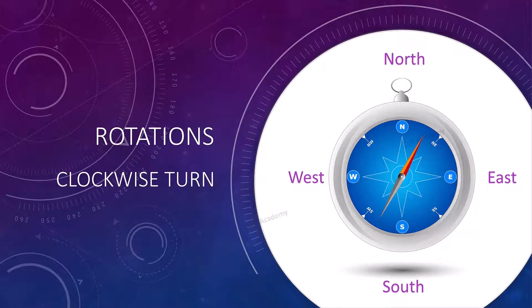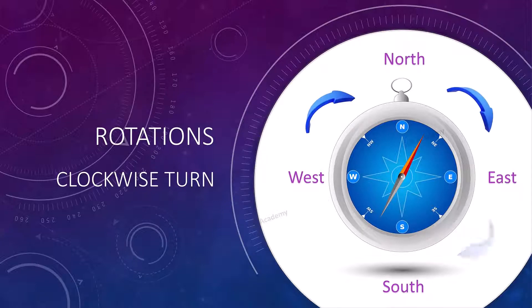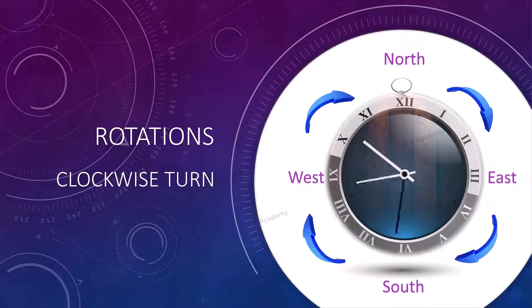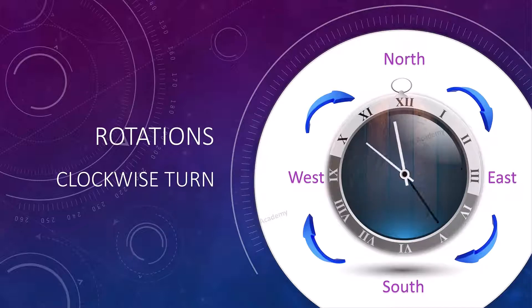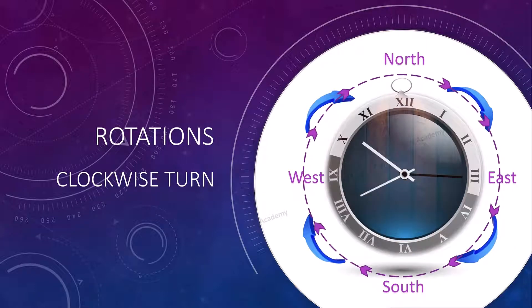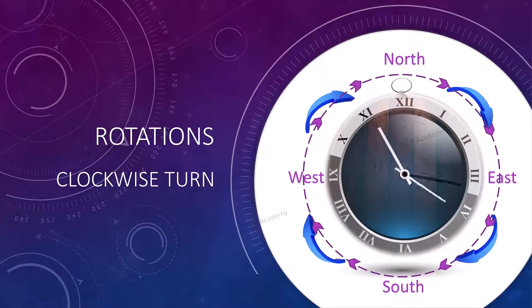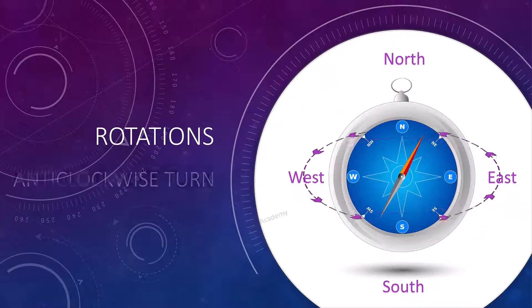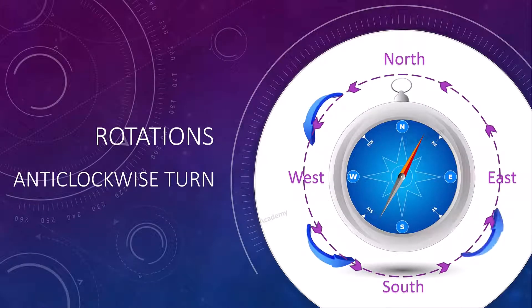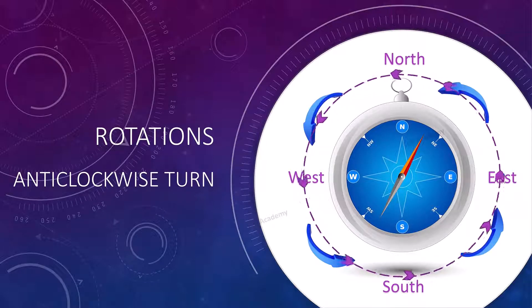Rotations: There are two directions possible in two-dimensional rotations — clockwise and anticlockwise rotations. Clockwise rotation proceeds in the same direction as the clock's hands, and is also called a right turn because it moves to the right. Anticlockwise rotation proceeds in the opposite direction of a clock's hand, and since it moves to the left, it is also called a left turn.